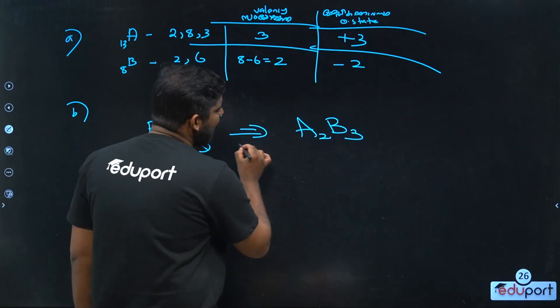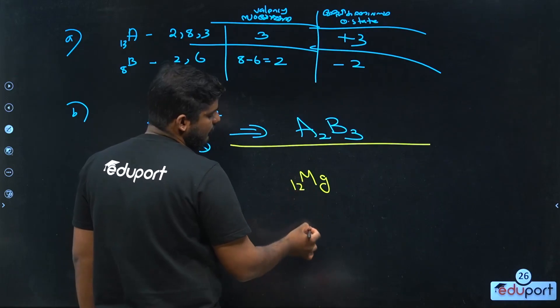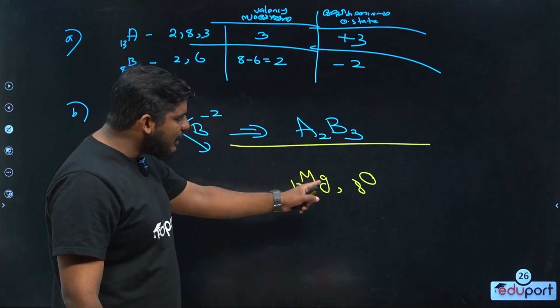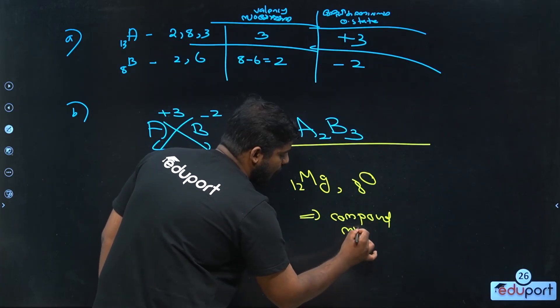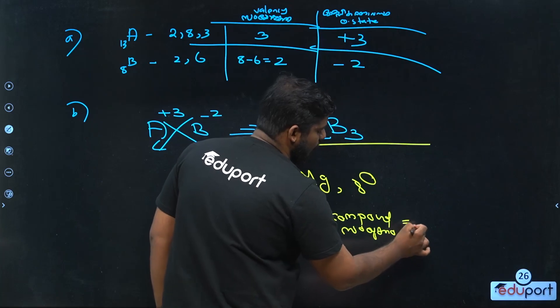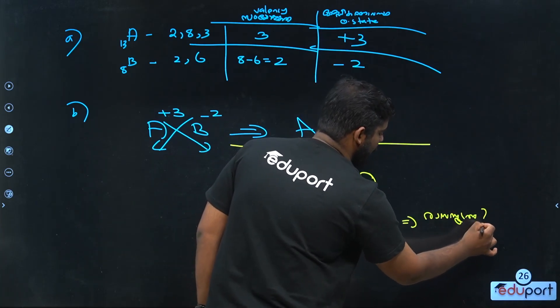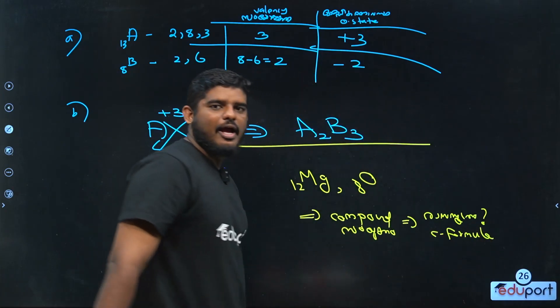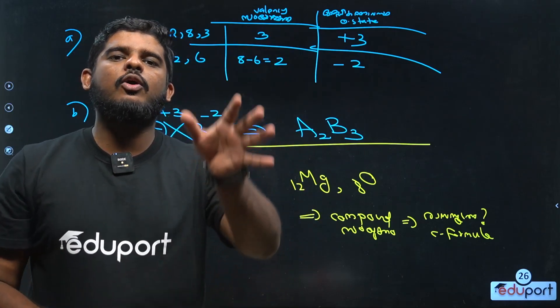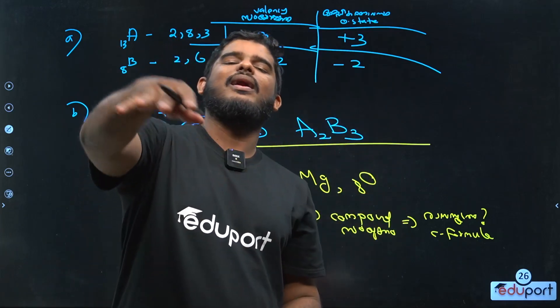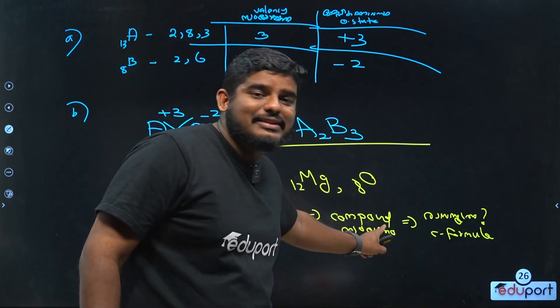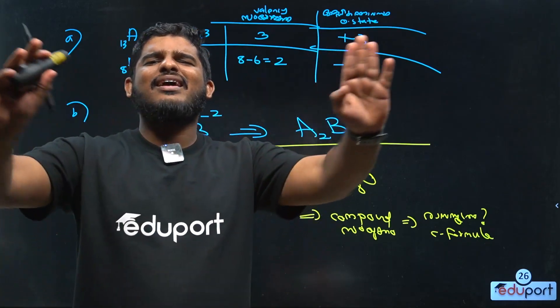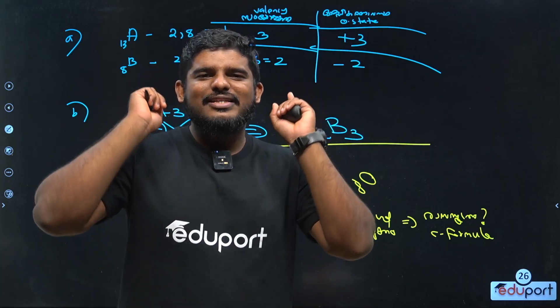For the last example: magnesium atom has atomic number 12 and oxygen atom has atomic number 8. If you combine magnesium and oxygen, what is the compound and its chemical formula? Study all questions and discuss in the comments. We will go into the third chapter next. Bye bye, see you — Jayzile signing off, have a nice day. Thank you.